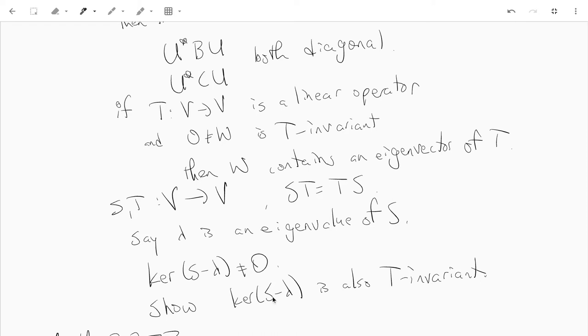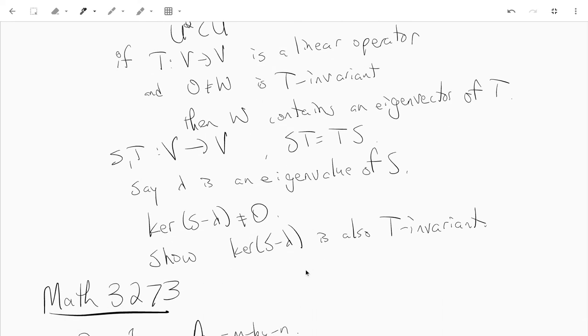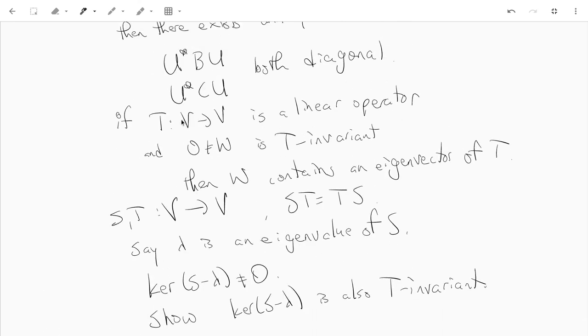This allows you to find an eigenvector for T in the kernel of (S - λI) that will also be an eigenvector for S as well. And then you can use this to build up a matrix U which diagonalizes both B and C.